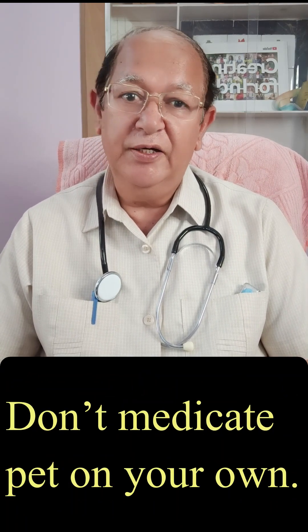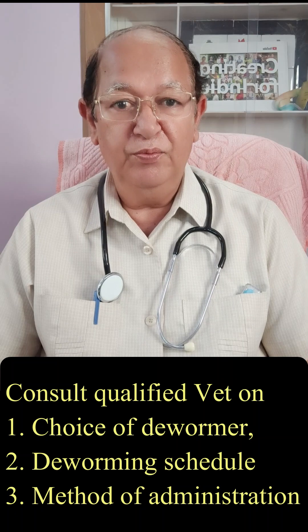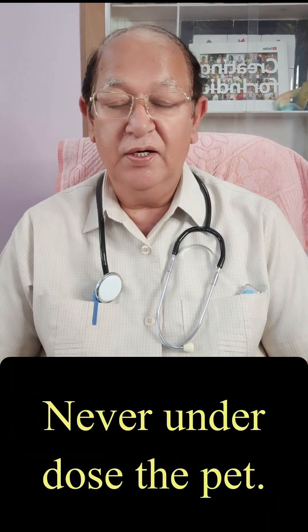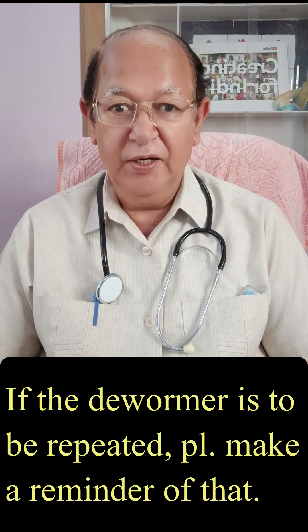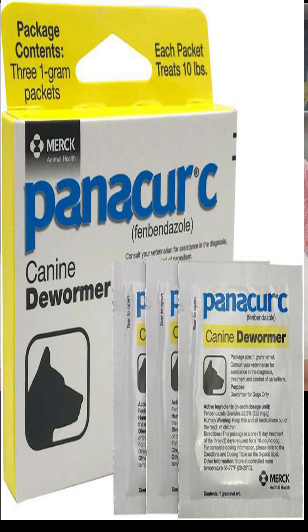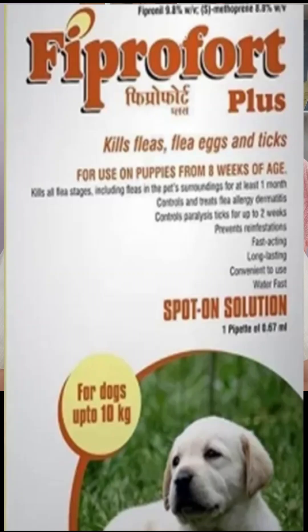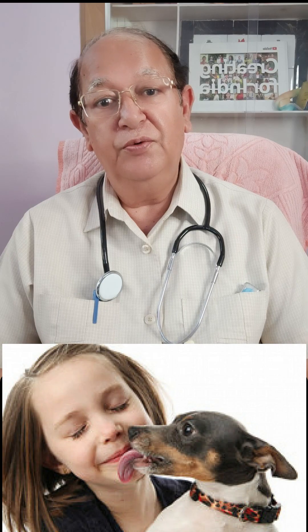Finally, the special considerations for deworming: do not medicate the pet on your own — always consult a qualified veterinarian on the choice of dewormer, deworming schedule, and the method of administration. Never underdose the pet. If the dewormer is to be repeated, please make a reminder of that, and always use the correct way of administration. By using the proper strategy of deworming, you will be able to help your pet dog grow properly, be joyful and playful, and also protect your children from getting infection from zoonotic parasites. Thank you very much.